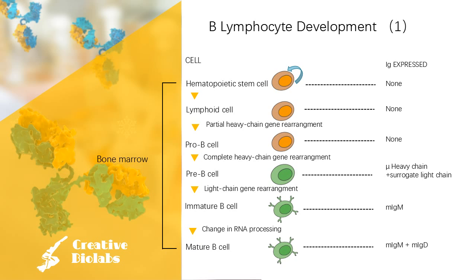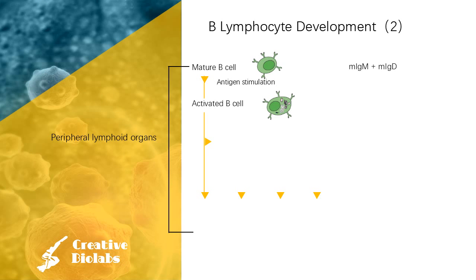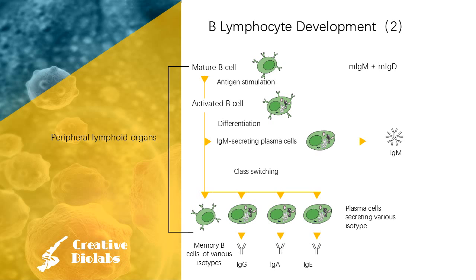Immature B cells are very sensitive to antigen binding, so if they bind self-antigen in the bone marrow they die. B cells that do not bind self-antigen express D chain and membrane IgD with their IgM about the time they leave the marrow and become mature naive resting B cells. B cell activation occurs in the secondary lymphoid organs, SLOs, such as the spleen and lymph nodes. After B cells mature in the bone marrow, they migrate through the blood to SLOs, which receive a constant supply of antigen through circulating lymph. The B cell is activated by antigen stimulation and differentiates into IgM-secreting plasma cells.